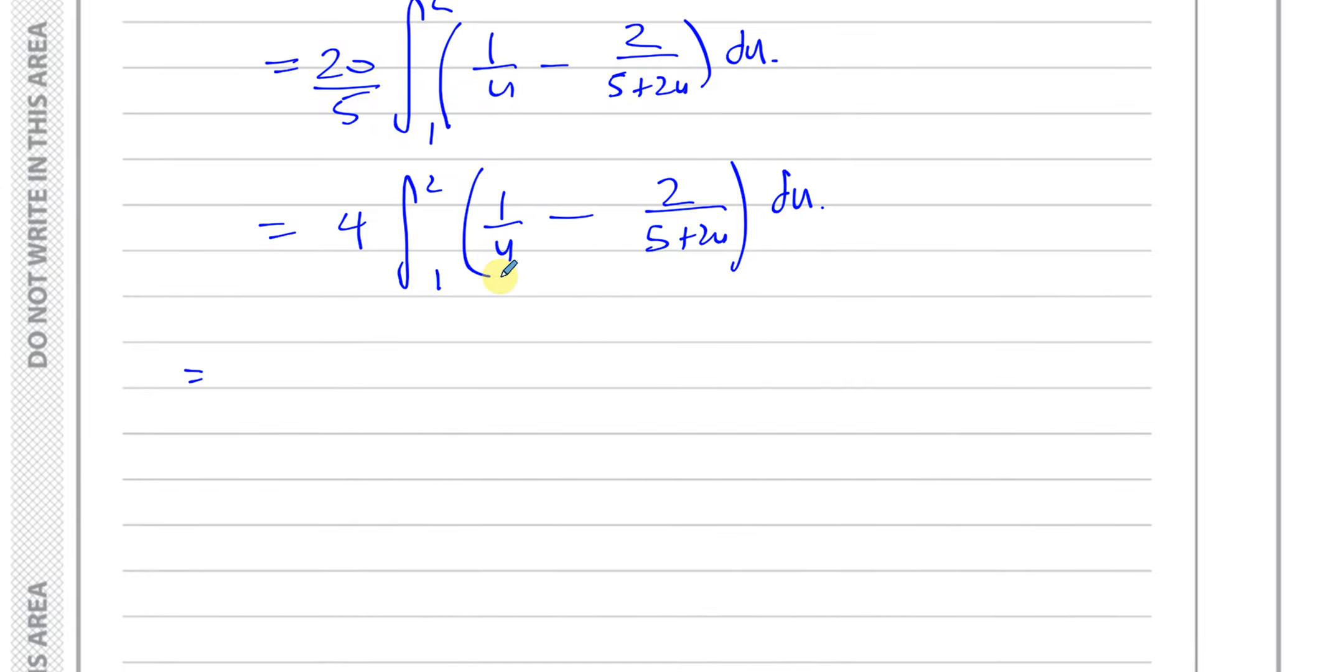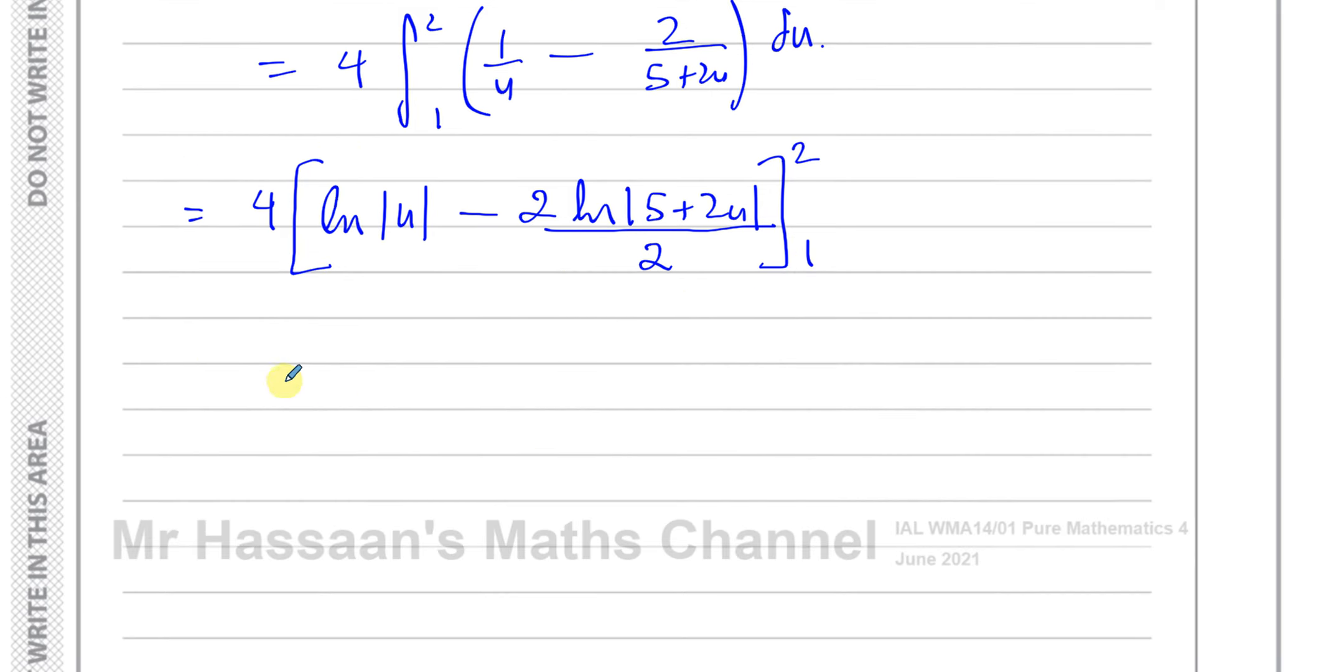Now everything is ready to be integrated, and then we can substitute these values in. When we integrate something of this form, remember we cannot make this a numerator because you'll have u to the power of minus 1. So we have to use the ln. This is now going to become a square bracket. So this is the ln of the modulus of u minus 2 times the ln of the modulus of 5 plus 2u. But I have to divide by the differential of what's inside here, which is 2.